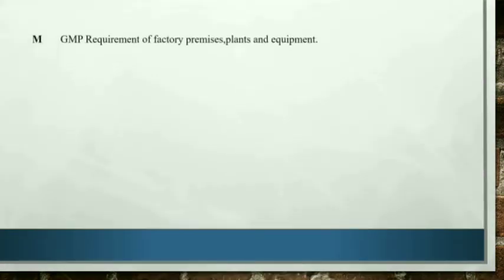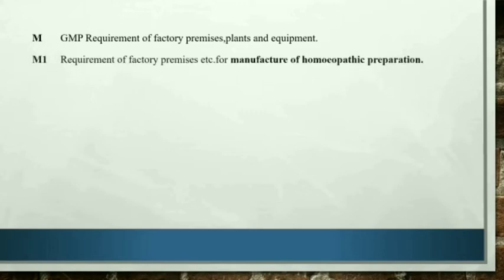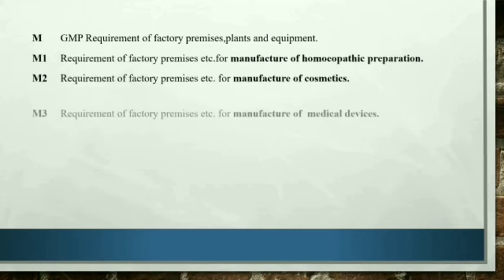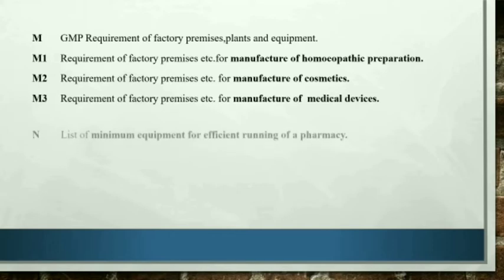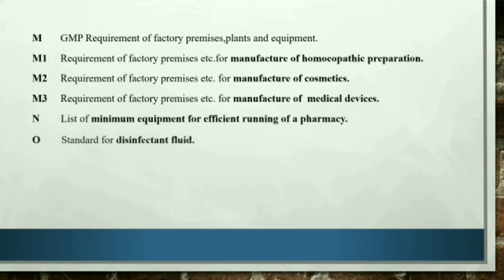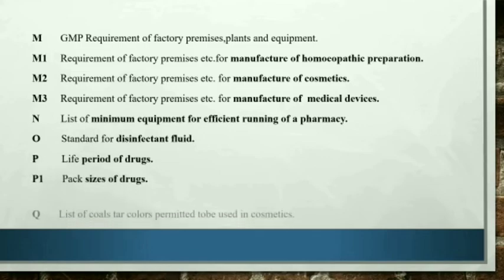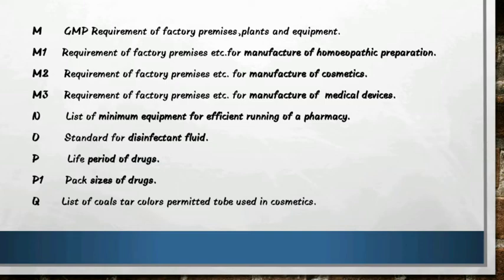In the third slide we discuss Schedule M to Q. Schedule M to the rules covers GMP — Good Manufacturing Practice — requirements of factory premises, plans and equipment. Under Schedule M we have M1, M2 and M3. M1 covers requirements of factory premises for manufacture of homeopathic preparations; M2 covers manufacture of cosmetics.